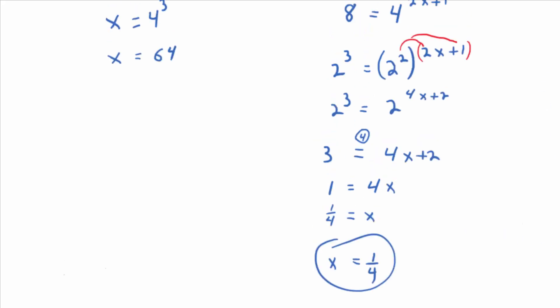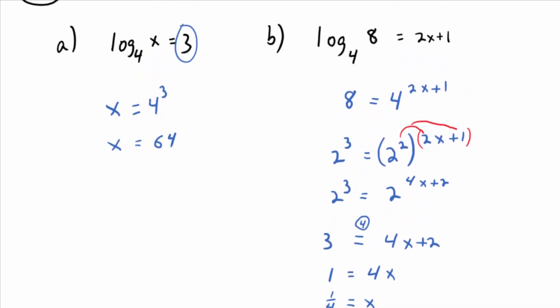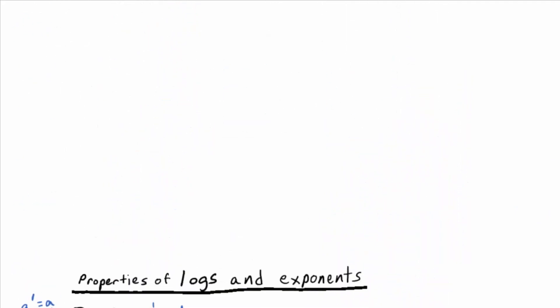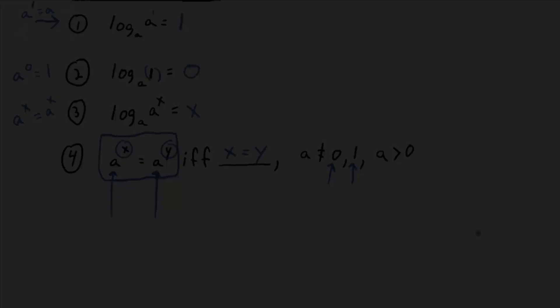So let's go back up. Does that technique make sense? So that's property four above. Very useful property in certain situations. We basically just, we had base two and that allowed us to set the exponents equal to each other.